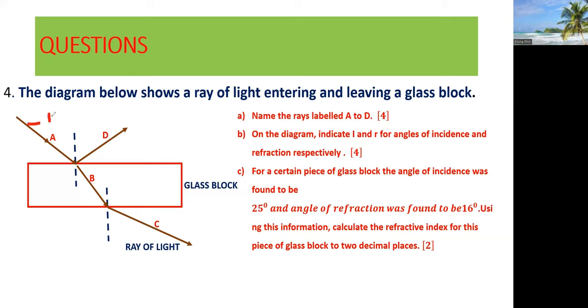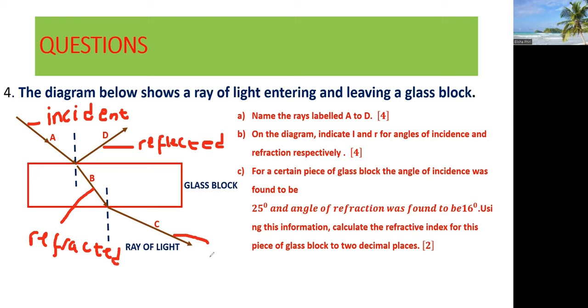So this one here is actually an incident ray. It's called an incident ray, then this one here is a reflected ray, then this one here is a refracted ray, and then this one here is an emergent ray. So we are done with labeling the rays.